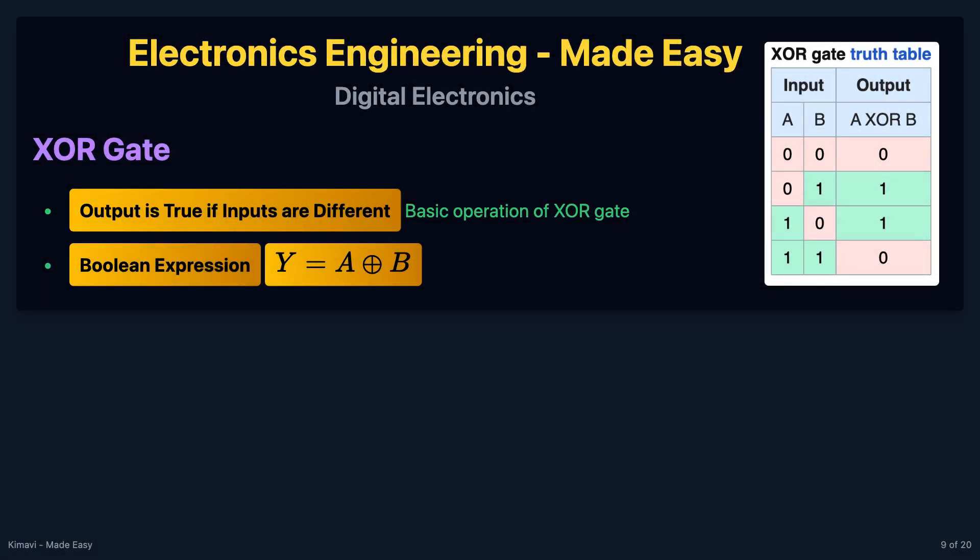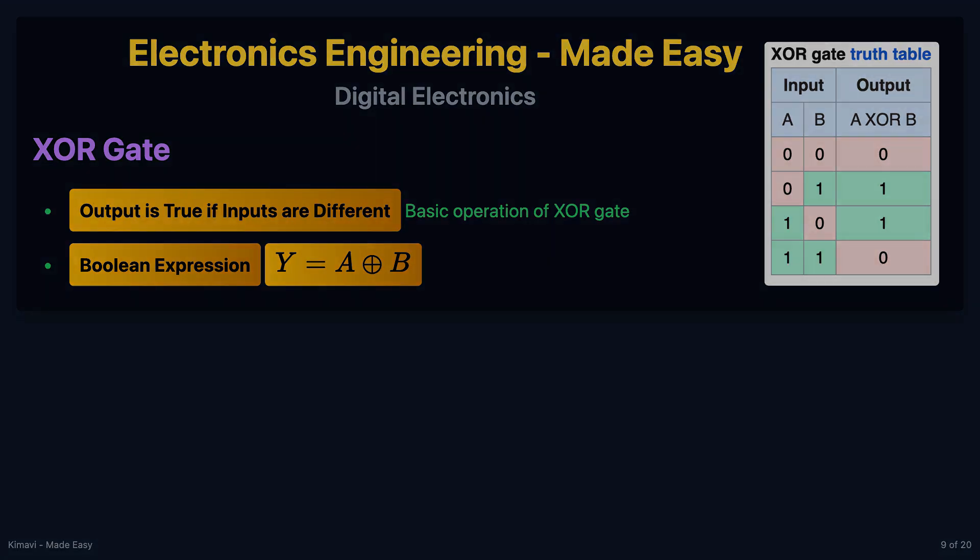The XOR gate outputs true if the inputs are different. The boolean expression for an XOR gate is y = a ⊕ b, where the symbol represents the XOR operation.